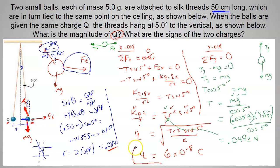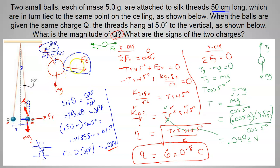To summarize the process: something is being pushed apart by electric force, so draw a force diagram — the electric force repels, tension holds it up, gravity pulls down. It's a two-dimensional problem, so apply Newton's second law in x and y. Set the x and y sums to zero since nothing moves, find the unknown components, keep going until you solve for all unknowns. That's today's discussion.